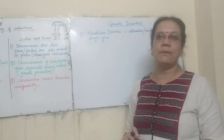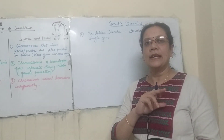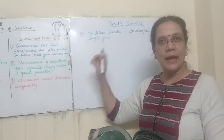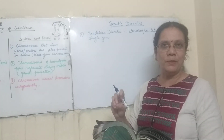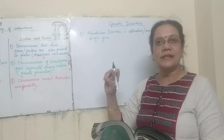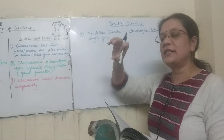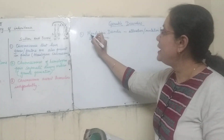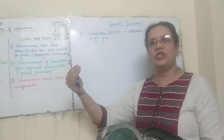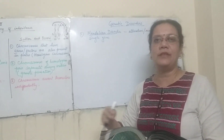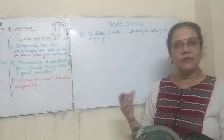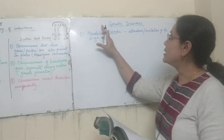We have done one example previously — sickle cell anemia. In hemoglobin, there are two alpha polypeptide chains and two beta polypeptide chains. In one of the beta polypeptide chains, at the sixth position, a mutation occurs, and because of that mutation the shape of the RBC changes. Due to this point mutation, the genes or gametes formed will all carry the same mutation, so the disorder will be passed to the next generation.